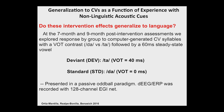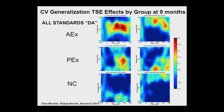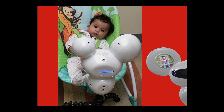Do these intervention effects generalize to language? Yes. Looking at high gamma at nine months as we continue to follow them longitudinally, the active group shows very high gamma, which is a prominent characteristic of early sensory processing and may index cortical activation — larger high but not low gamma responses are correlated with increases in overall firing rates, particularly during attentional modulation. And with that, I show you our prototype that delivers the same intervention in the baby's home. Thank you.